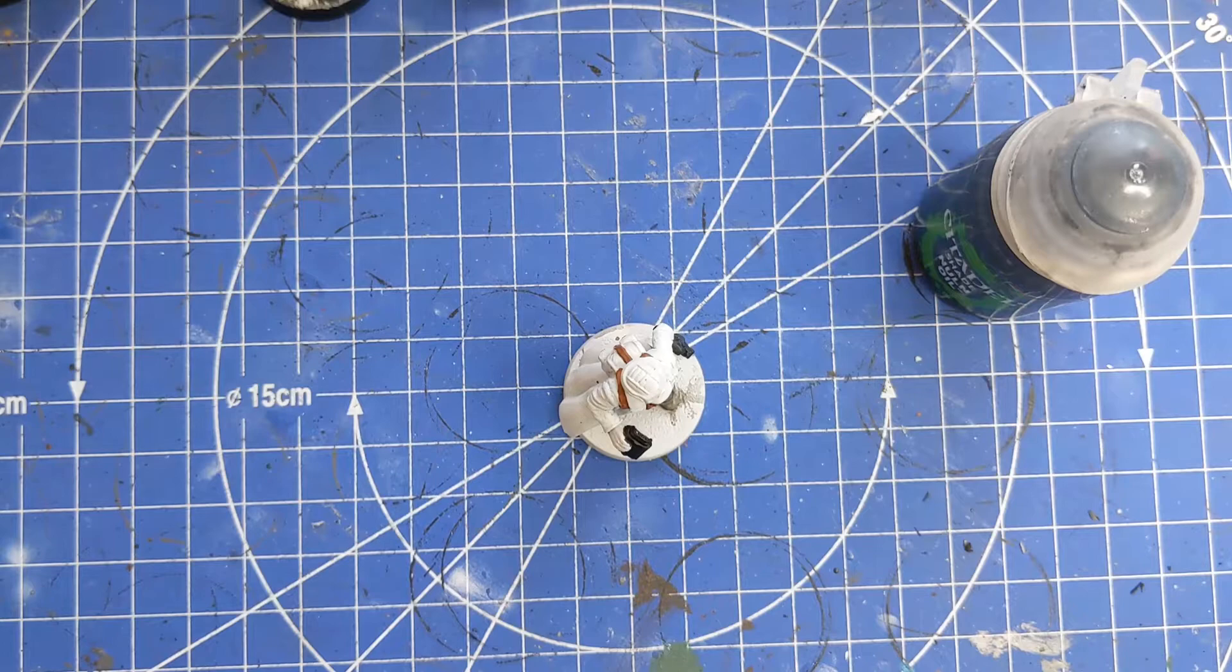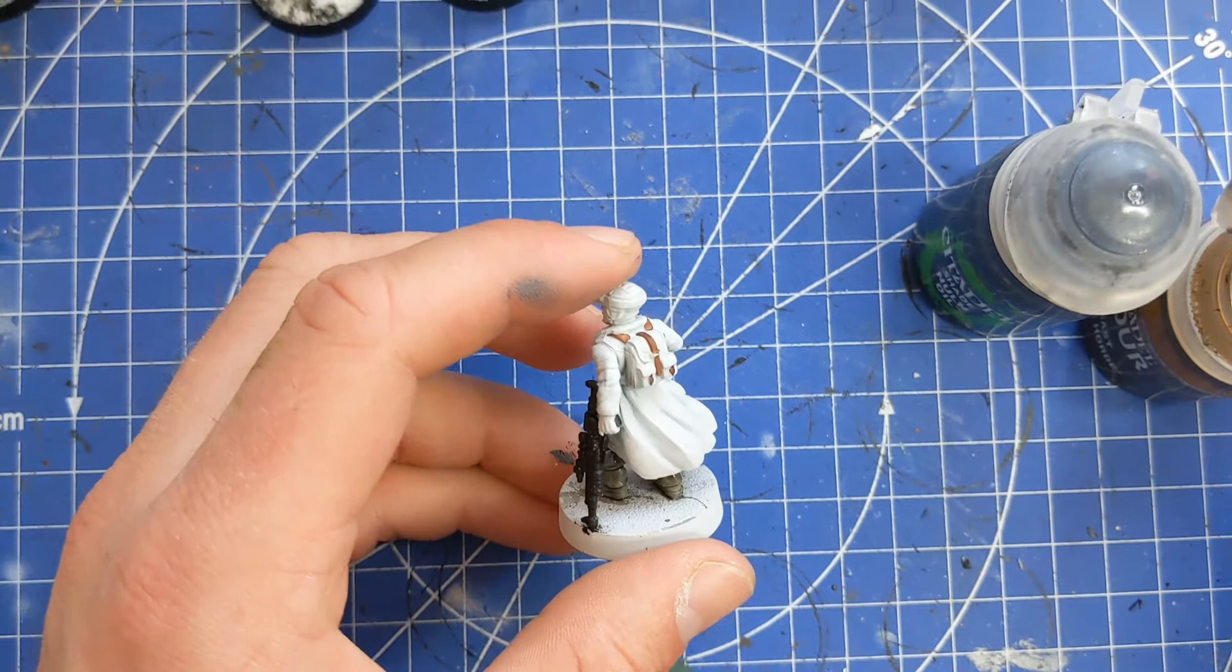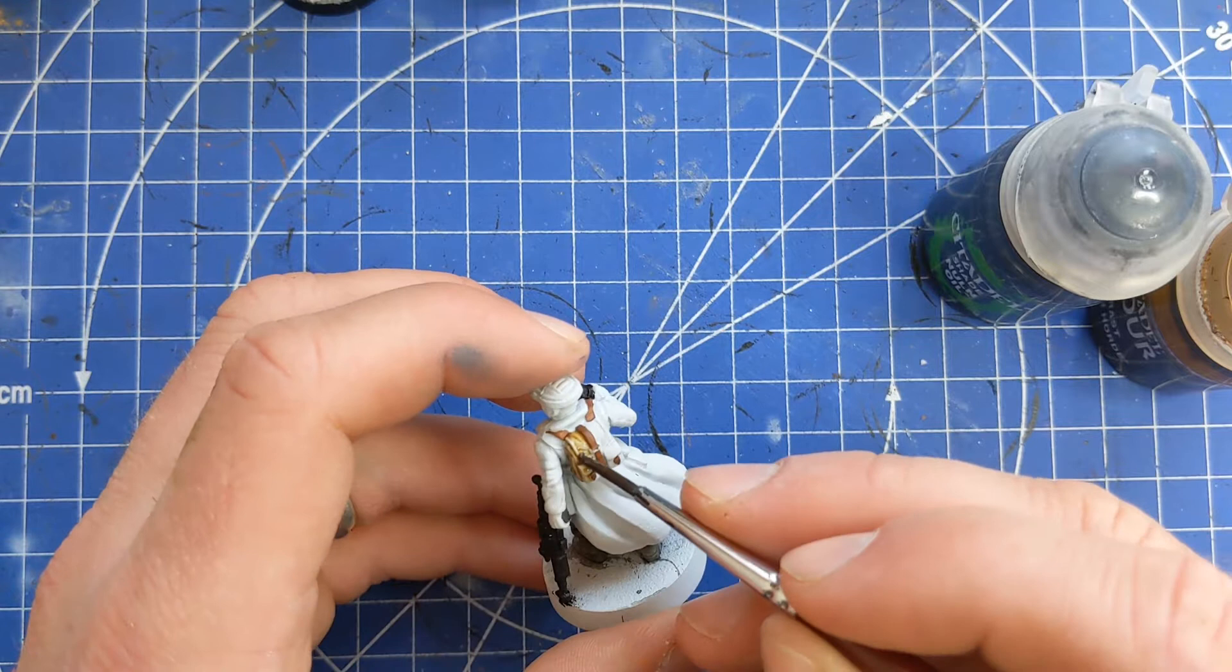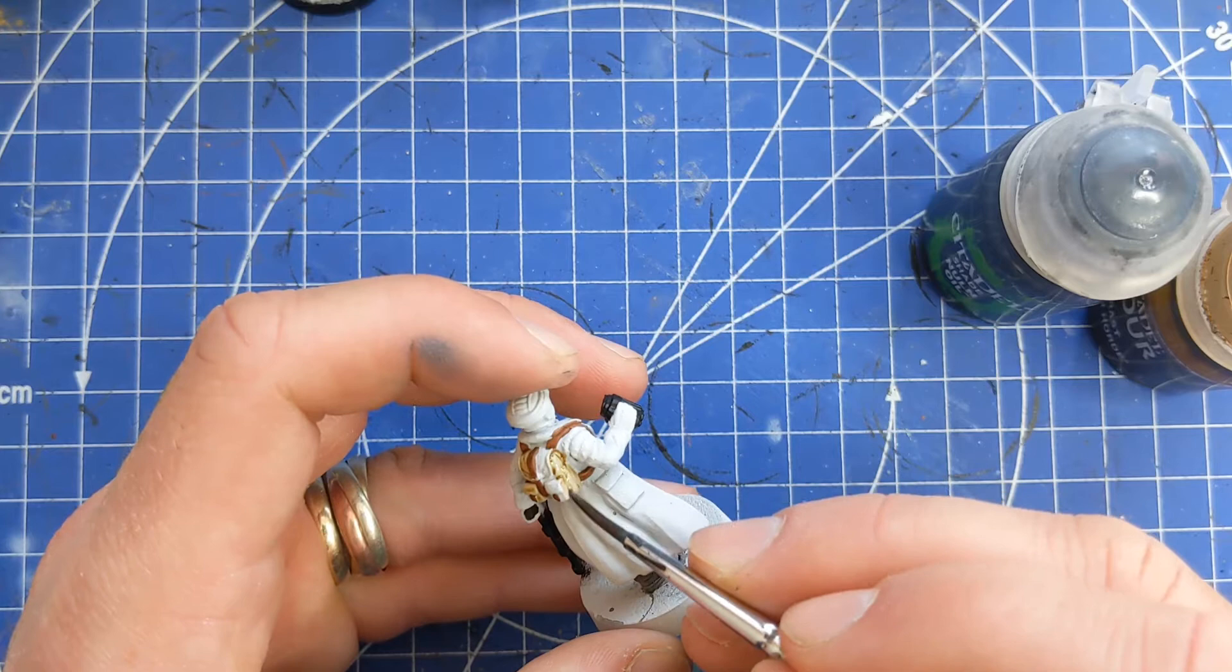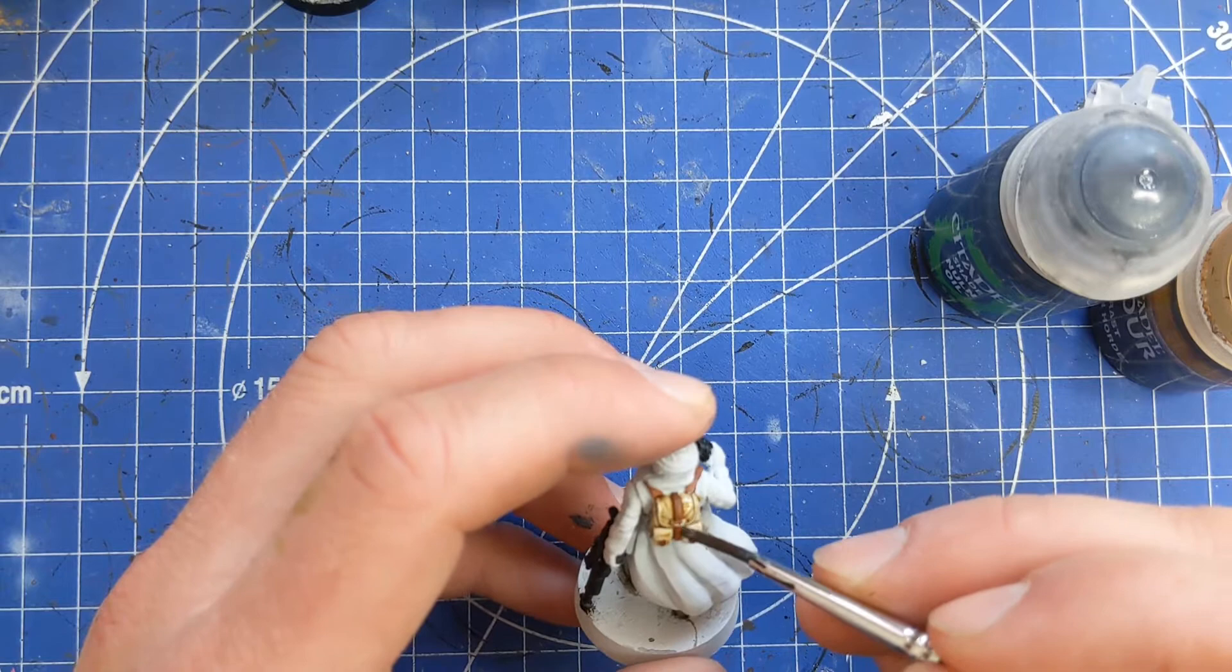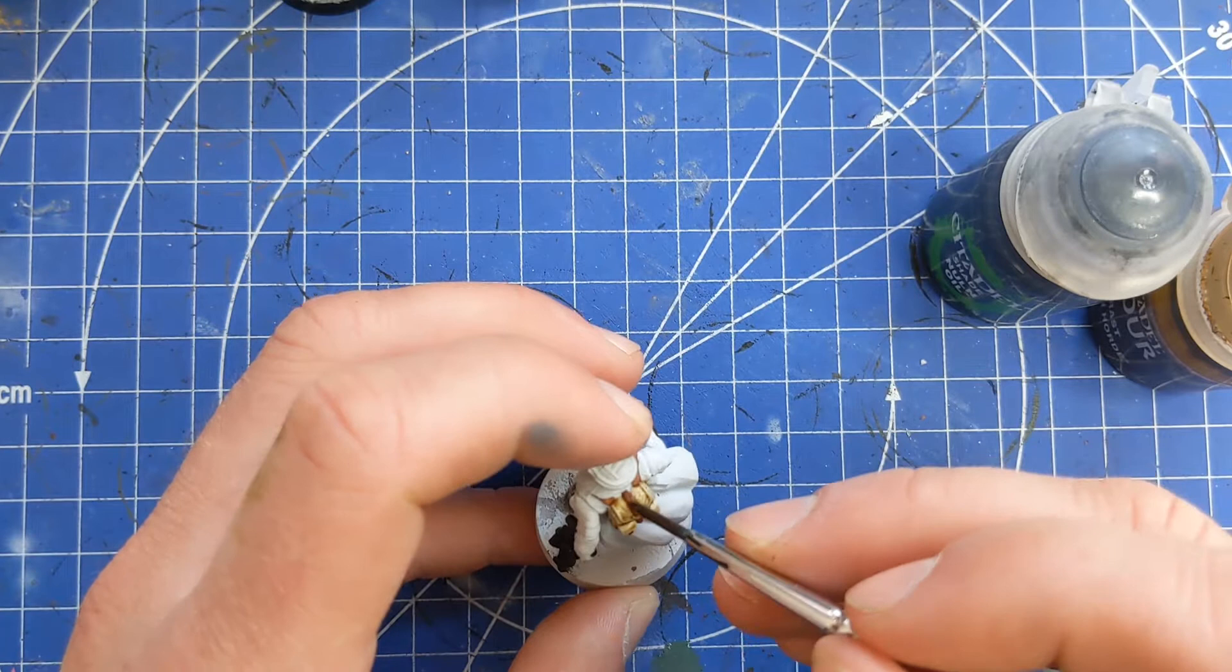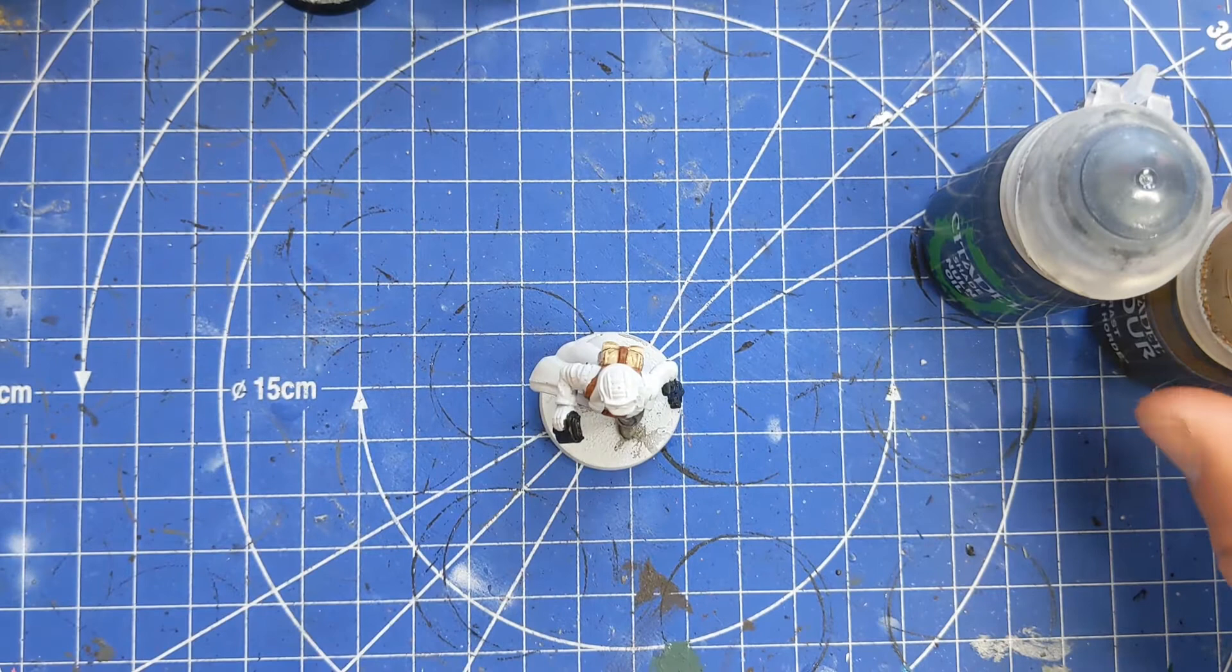We'll just do a little bit just on the leather work, just in between these pieces. Next we're moving on to Contrast Skeleton Horde. For this lovely bit of paint we're going to do this backpack. You can do the backpack in whatever color you like but I just found using this contrast paint really works very well on a white base.